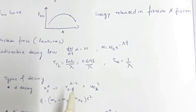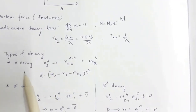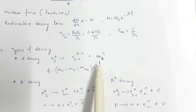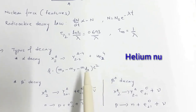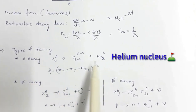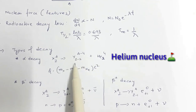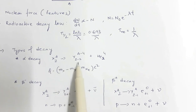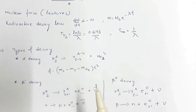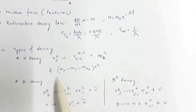Next, the types of decay. Alpha decay involves the release of an alpha particle ₂He⁴. When alpha decay occurs, the product has an atomic number decreased by 2 and mass number decreased by 4. The expression for the Q-value — the energy released in the alpha decay reaction — is also important.